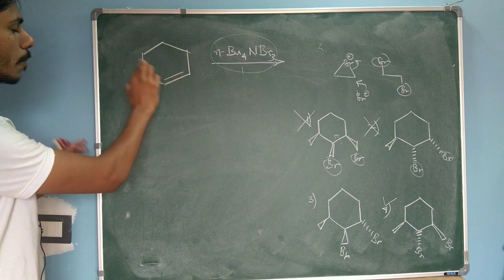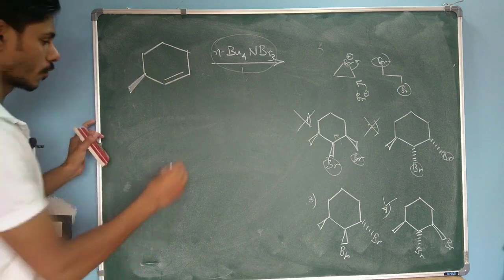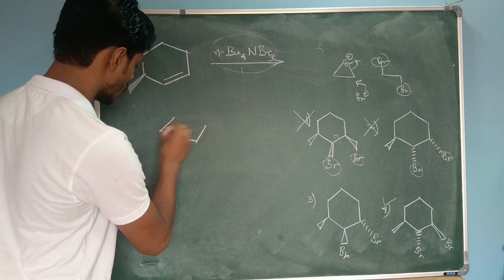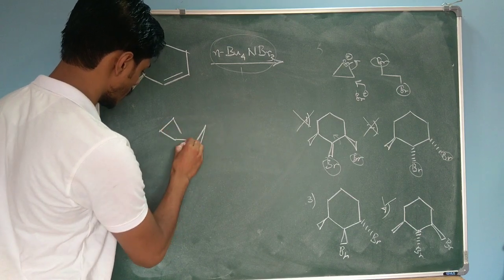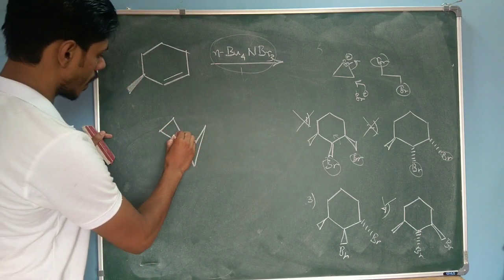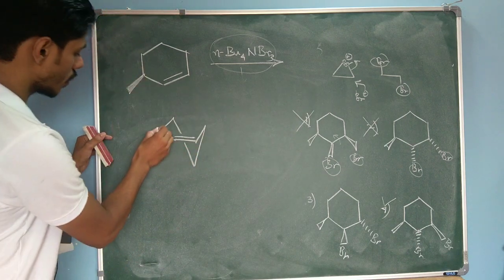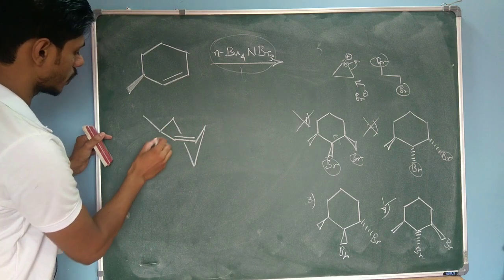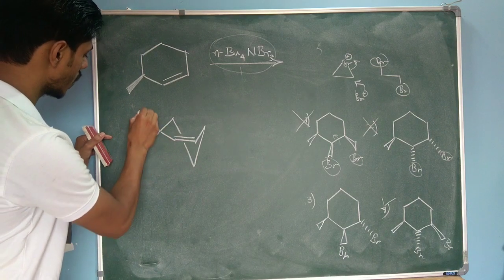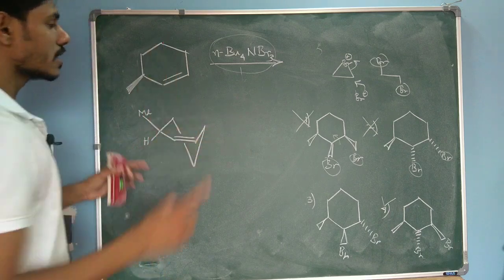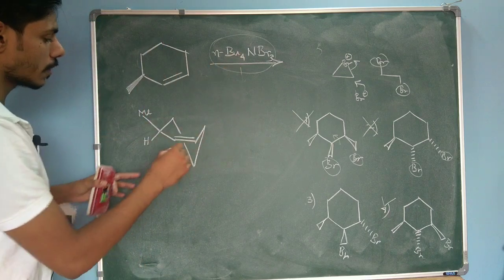For that you have to work out the mechanism. First you have to draw this particular compound in its proper half chair conformation. If you just draw it will look like this. Now I am watching this from here so this methyl group will be above the plane so I put this methyl group just above the plane. So here you will have hydrogen, here you will have methyl.